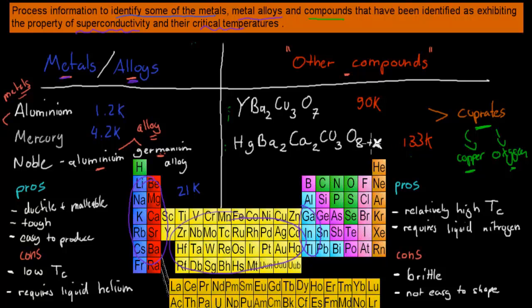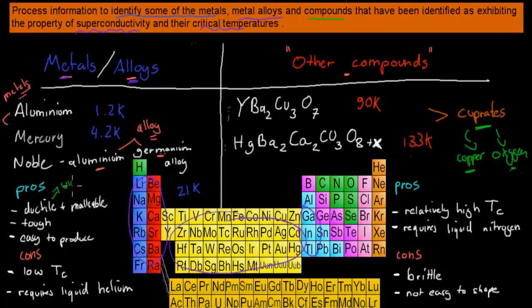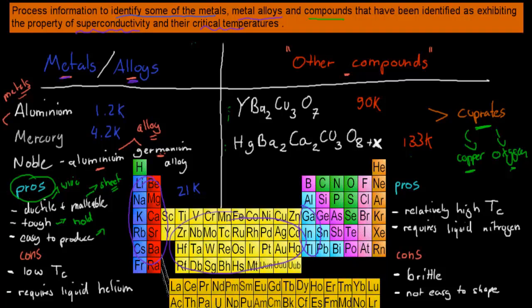Now I'll go over the pros and cons of metals and alloys compared to the other compounds — why we tend to use the cuprate compounds more. The pros of metals and alloys: they're ductile, meaning we can draw them into wire, and malleable, meaning we can form them into sheets. They're also tough — they can withstand quite a bit of damage. And they're easy to produce: you just smelt the material and you have your metal, it's a straightforward process.